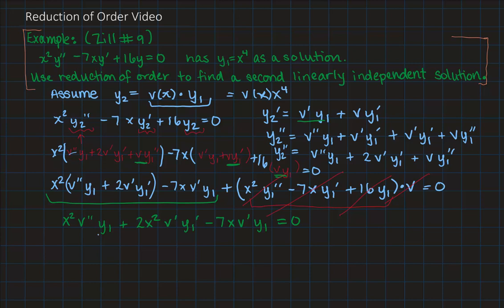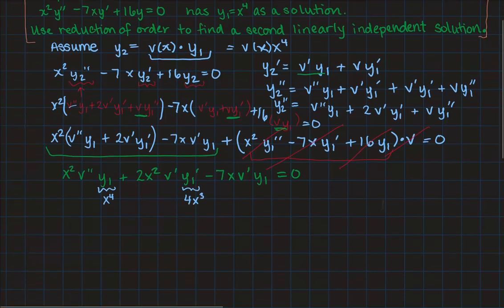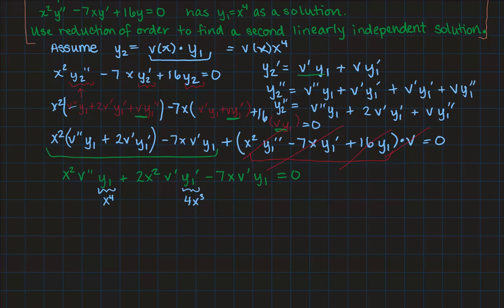So my y1 was x to the fourth and therefore its derivative would be 4x cubed. So the equation I want to solve looks like this. I'm going to multiply the x to the fourth by the x squared in the first term. So I get x to the sixth v double prime plus I have 2x squared times v prime times 4x cubed. So that's 8x to the fifth v prime minus 7x times y1, which was x to the fourth, would be 7x to the fifth v prime equals 0. So now we combine those two terms that are identical, x to the sixth v double prime plus x to the fifth v prime equals 0. So I combined the last two terms.